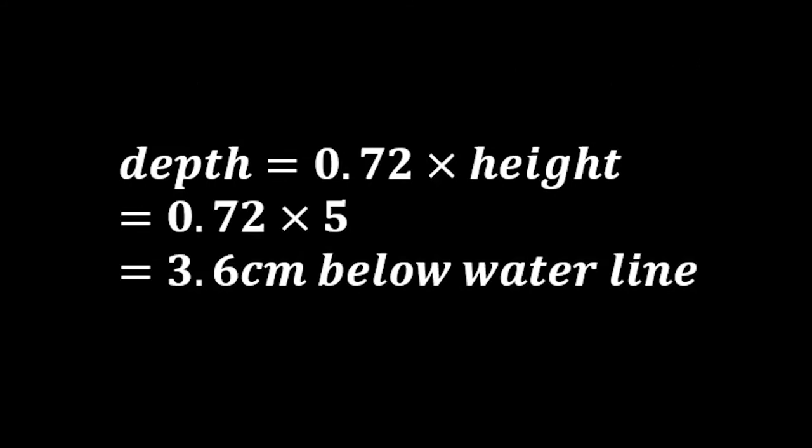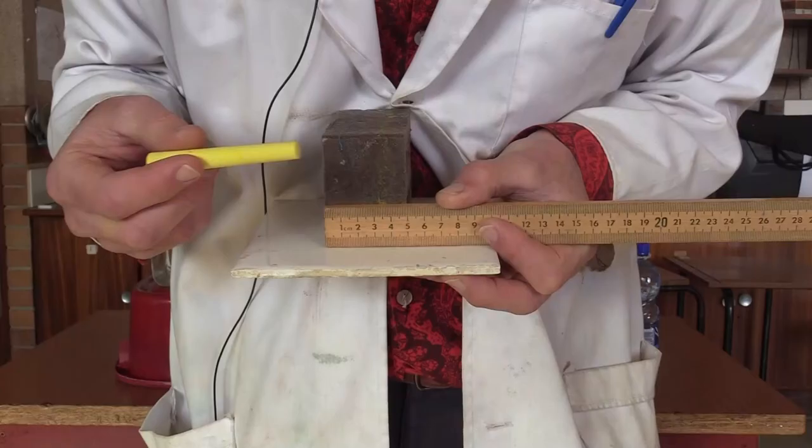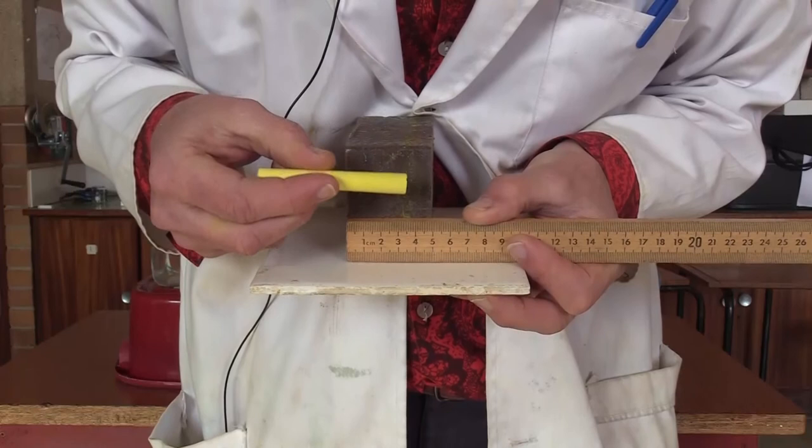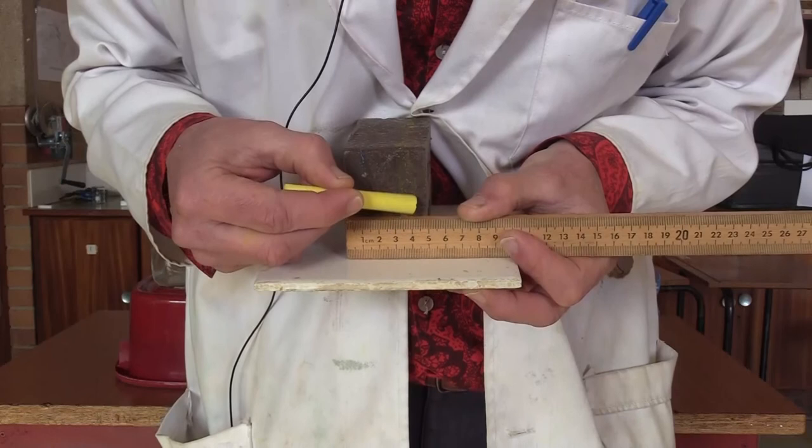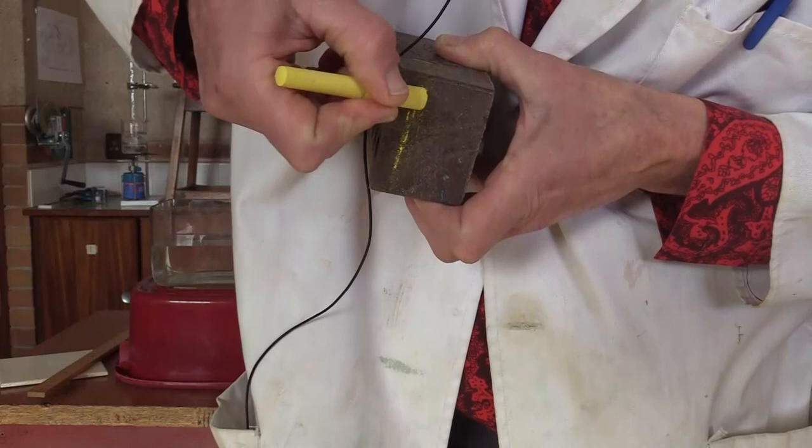To find out where it will float or how deep it will sink, 72% of the block will be submerged below the water line. So 0.72 times the height of the block gives us 3.6 centimeters below the water line. So we now mark that distance off from the bottom, 3.6 centimeters.